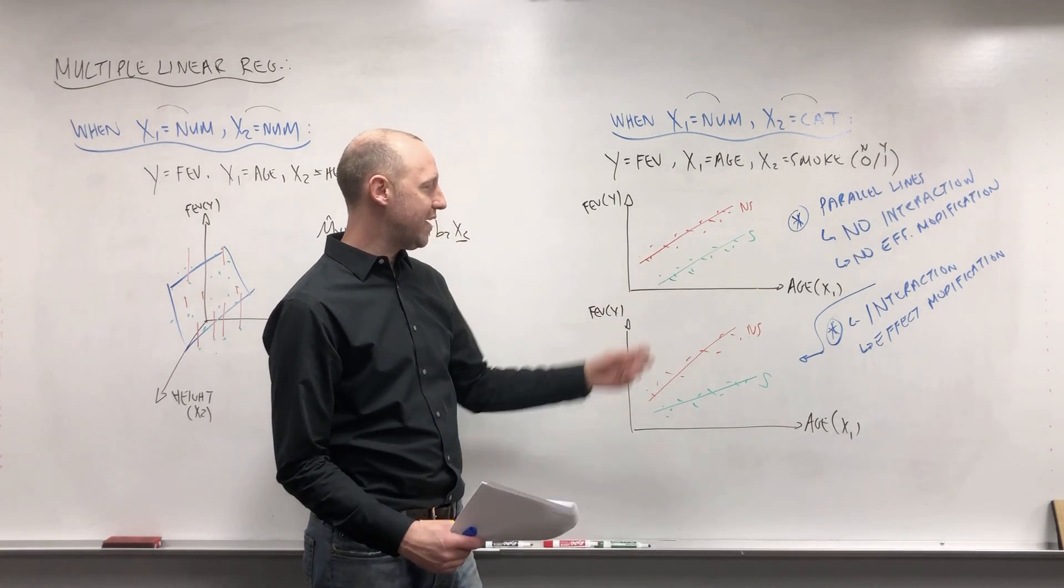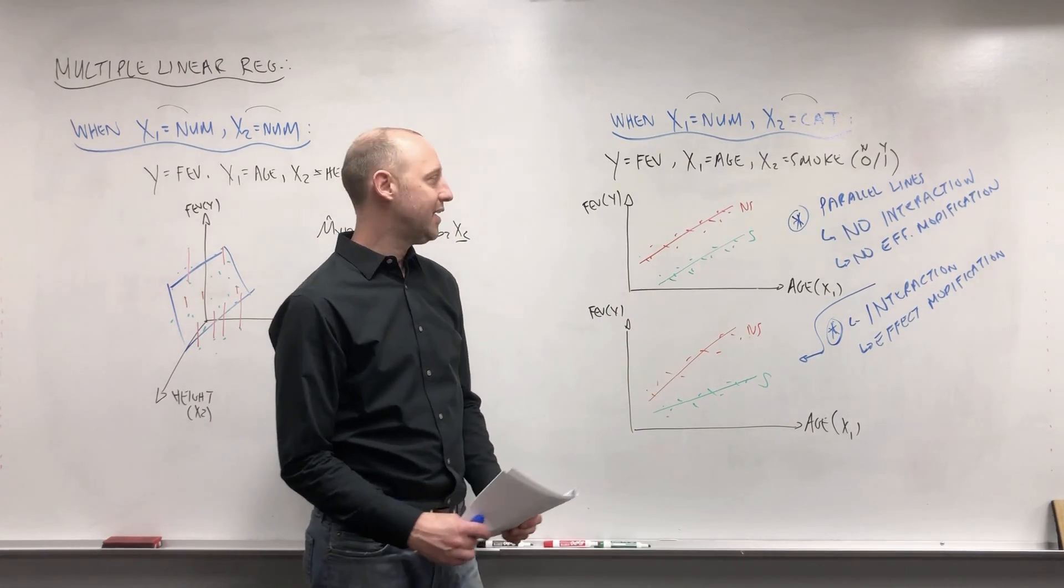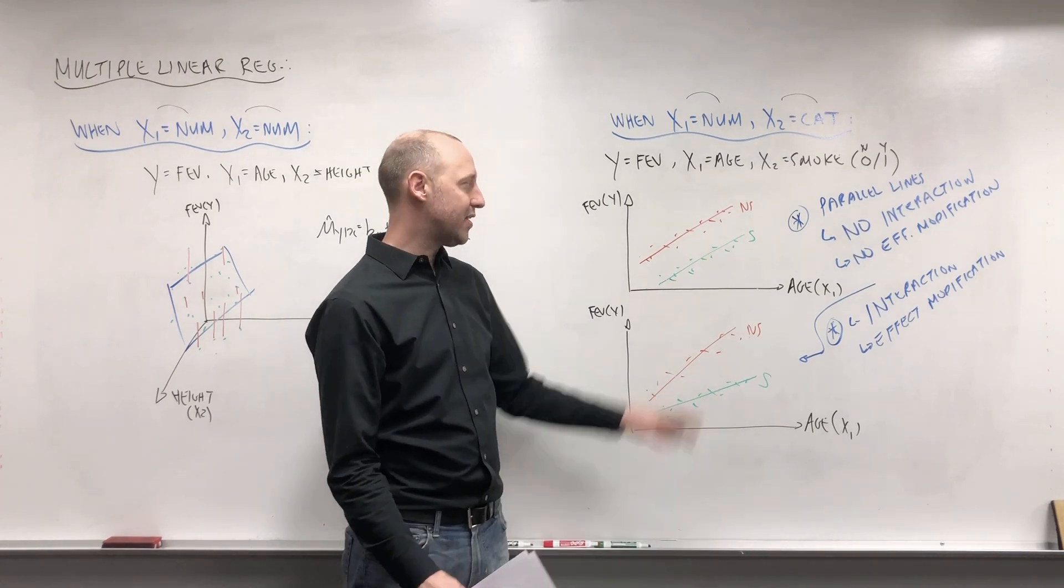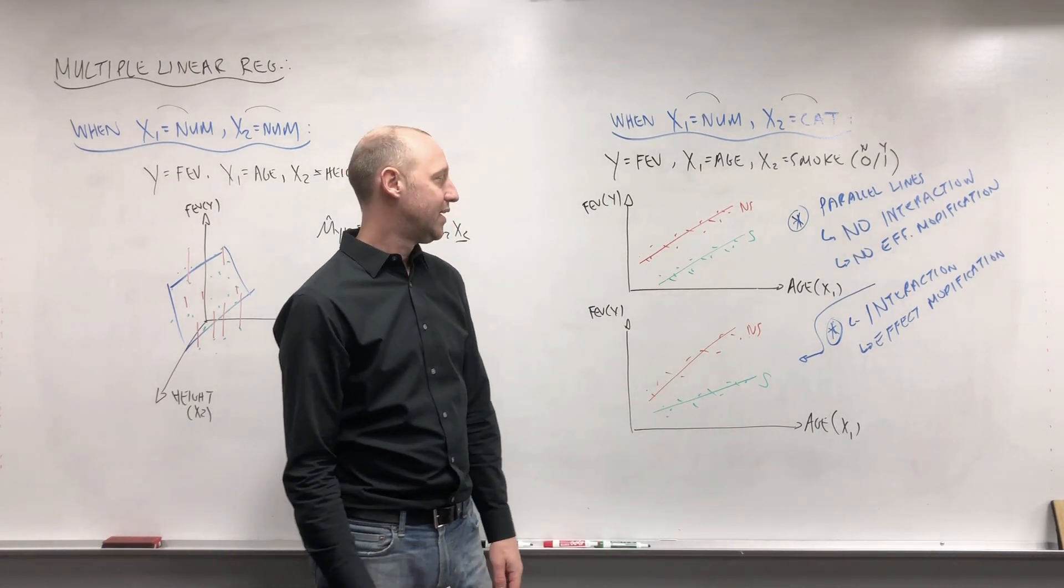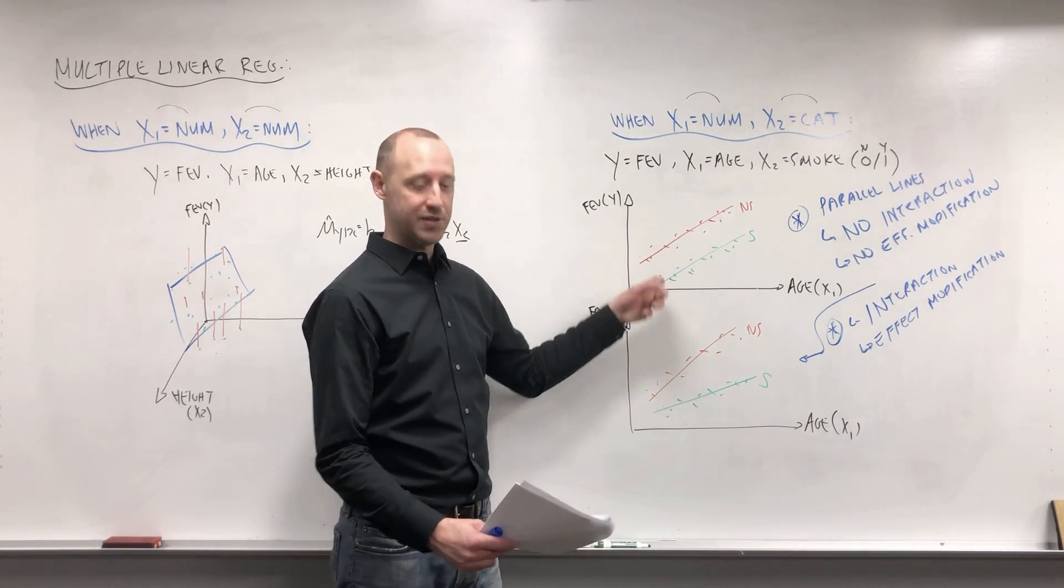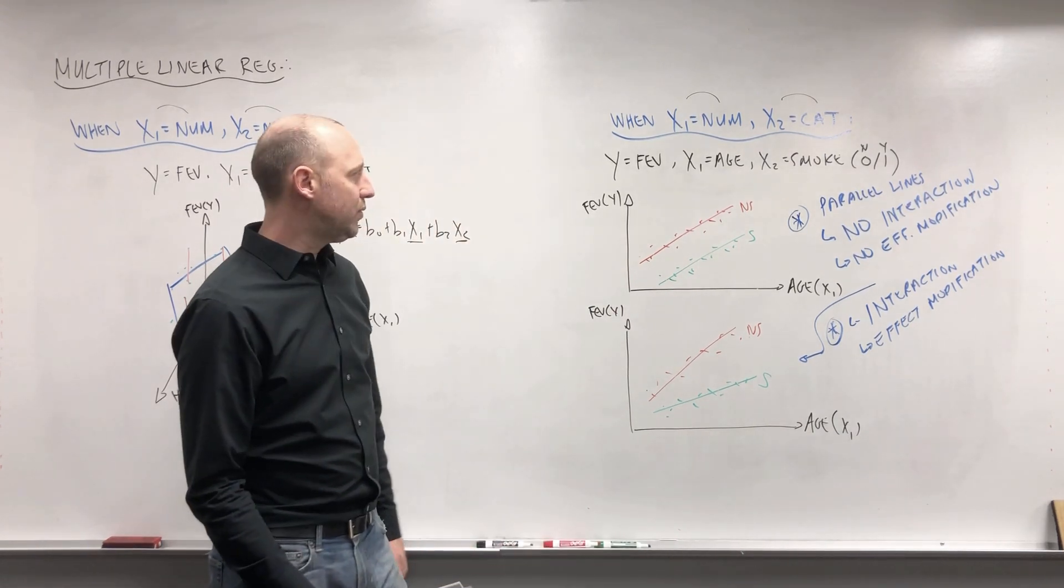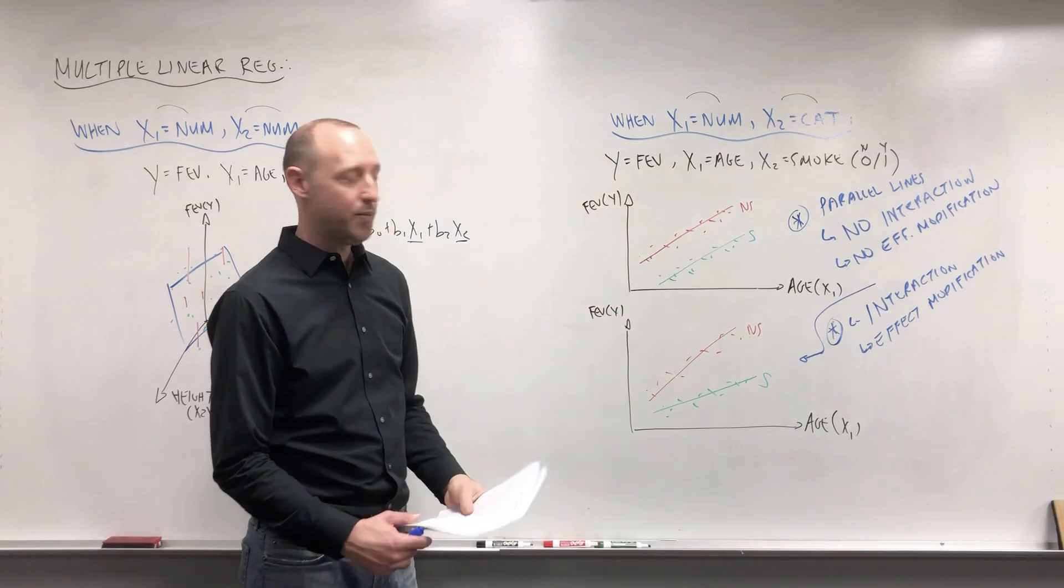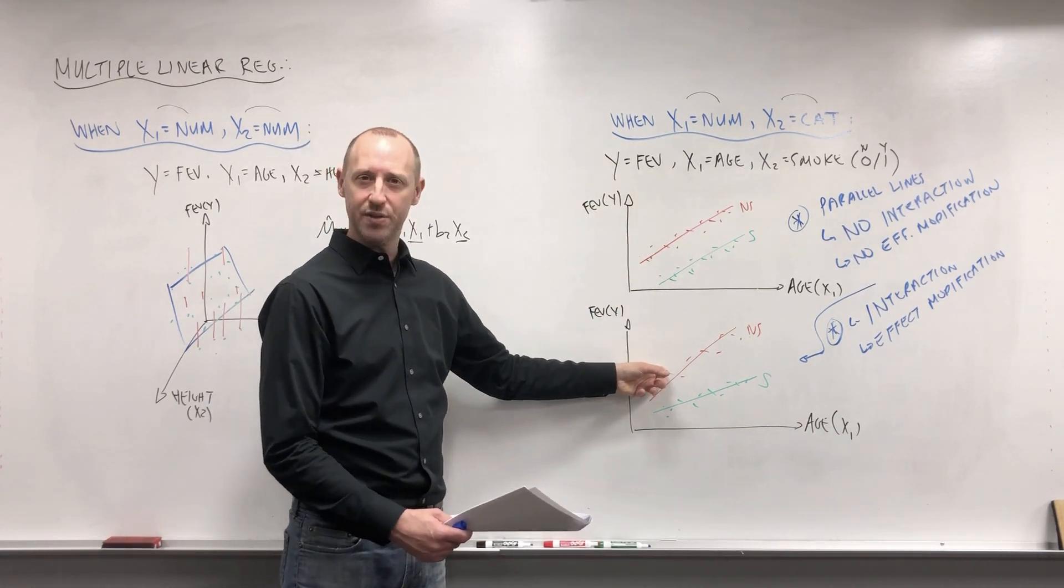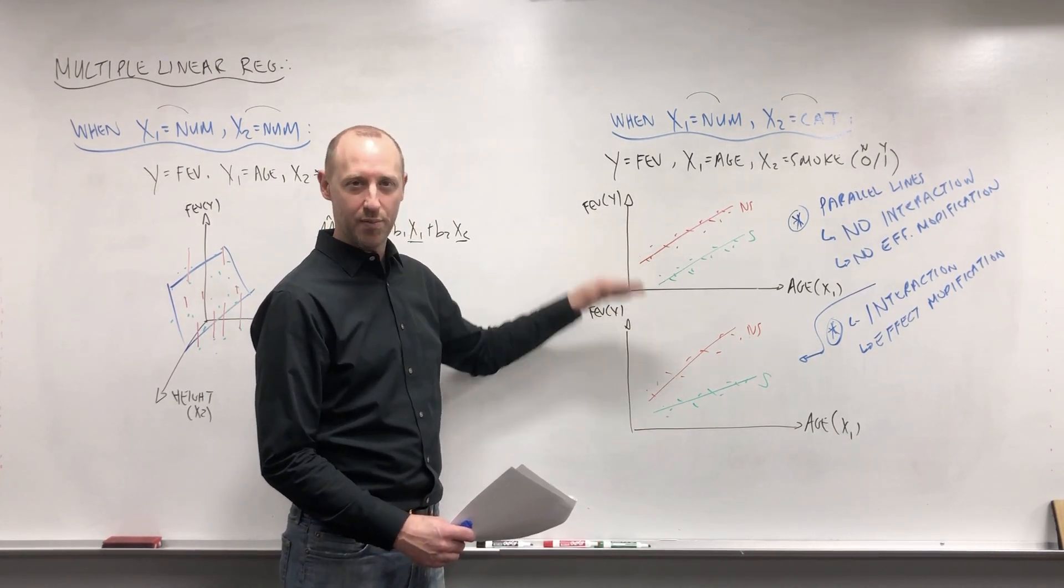One choice we're going to have to make is if we want to force the lines to be parallel or allow them to be different, and that idea is if we think there is no interaction or if there is. Later on we'll expand on this idea and we'll also decide conceptually as well as statistically how to decide which one we think is a better representation of the reality. So now what I'm going to do is get into again looking at numeric values for no interaction versus interaction model and working with some of that. And in a separate video we'll look at fitting these two different models in R.